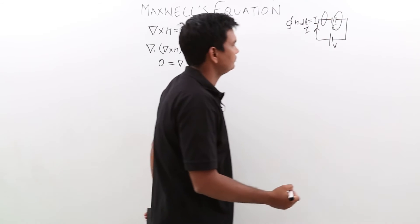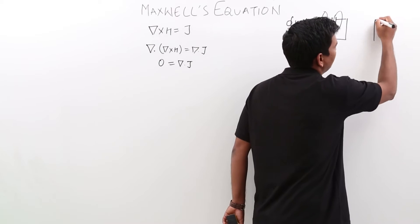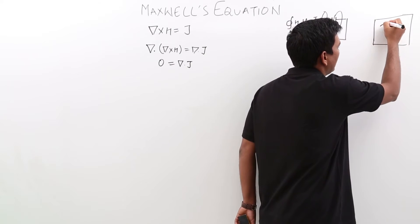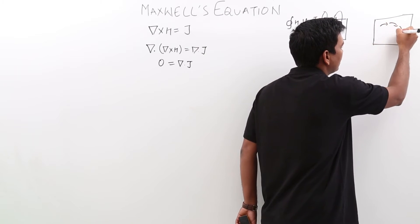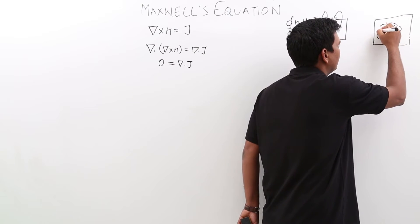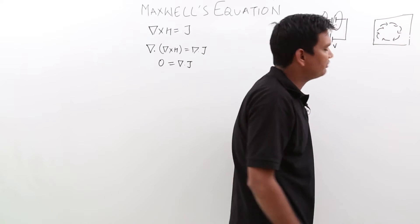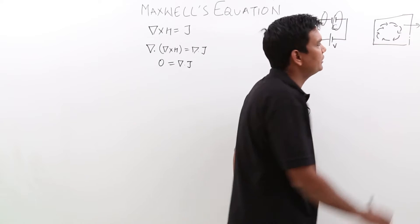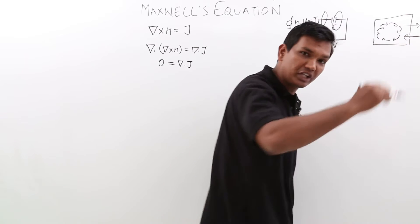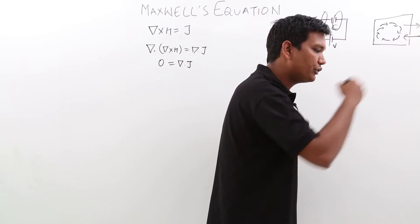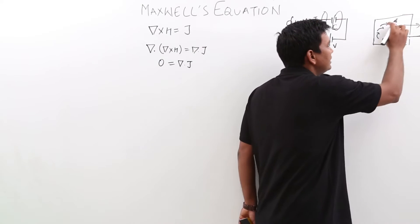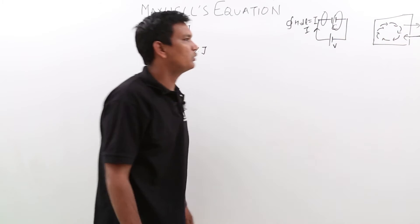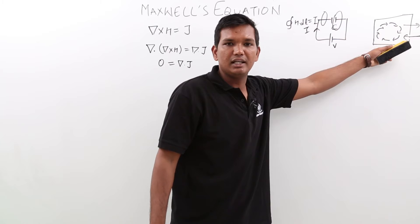Let us see how. Let us assume I have a black box with a curl inside — meaning some field lines are rotating in a circle, some rotational fields. If any field is rotating, none of the field lines will go out and none will come in, because they are rotating in a circle. So the divergence of curl will be nothing but zero. This is a practical example.